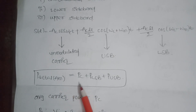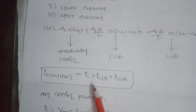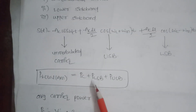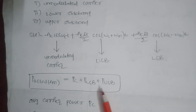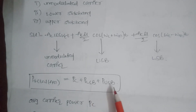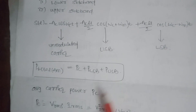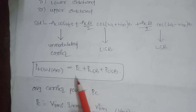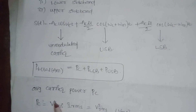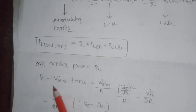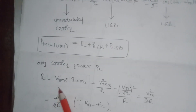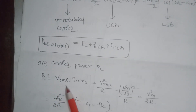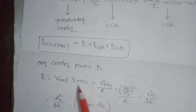Here we consider power consumed by the carrier signal and power consumed by the sidebands. The sideband power is the summation of lower sideband and upper sideband. First, consider power consumed by the carrier signal, denoted PC (P suffix C).